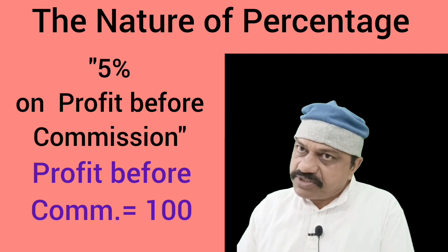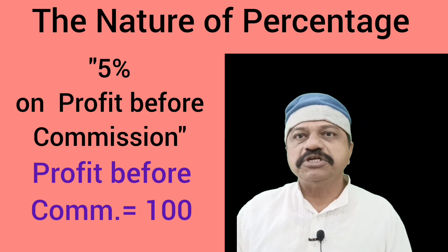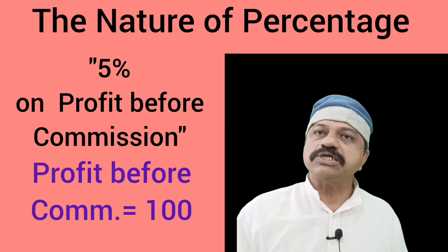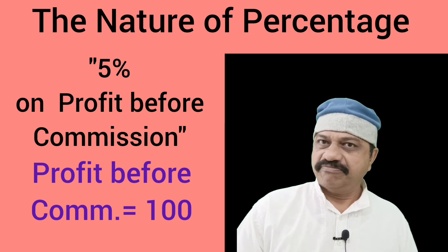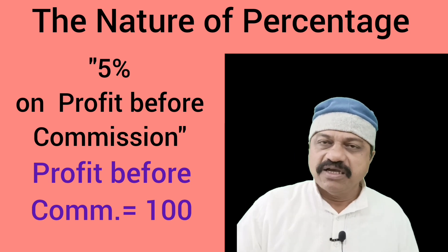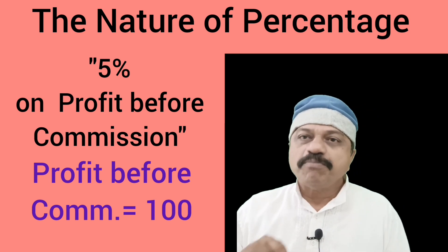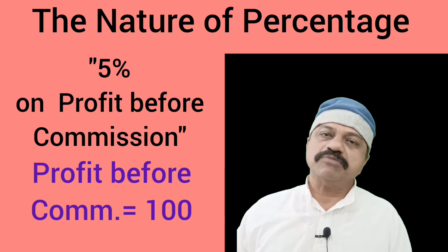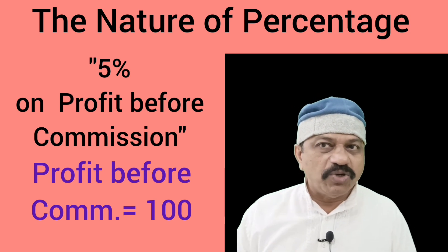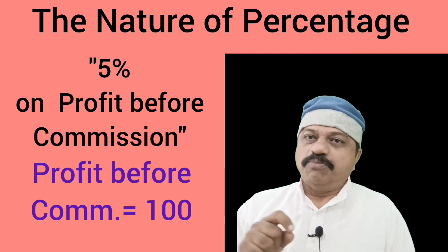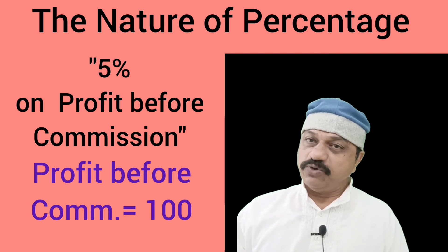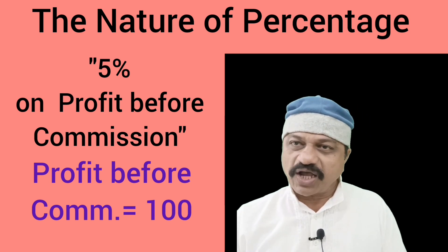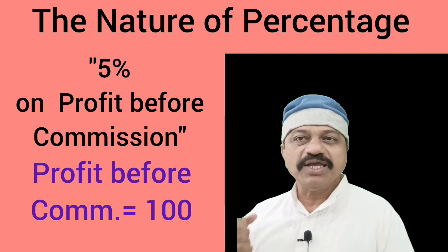Example 10: Manager gets 5% commission on profit before charging such commission. Here, 100 stands for profit before charging such commission. Commission is equal to profit before charging manager's commission multiplied by 5 divided by 100.